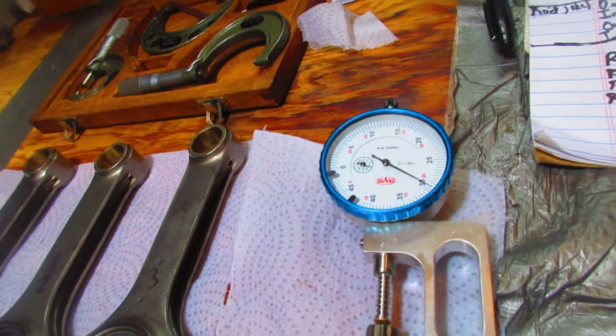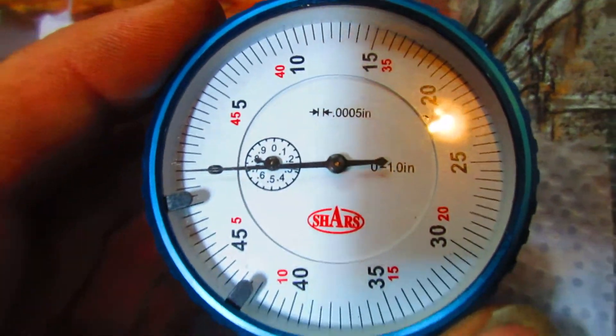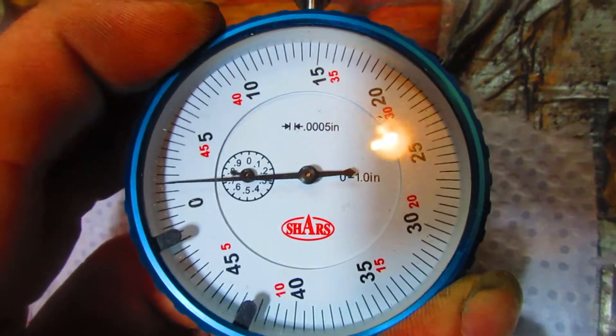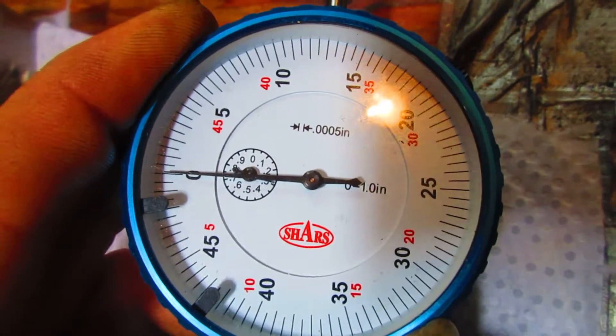So, let me go ahead and put it in there, and it's zeroed already. So you're going to twist the dial to where the zero is on the pointer.